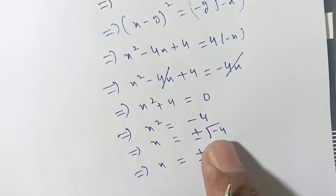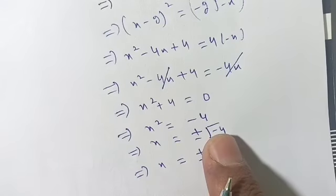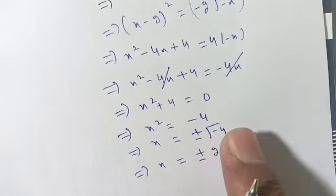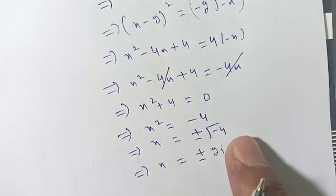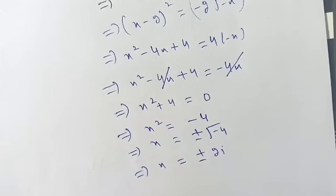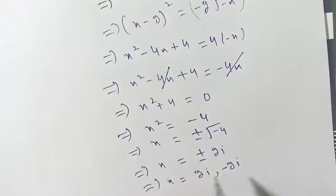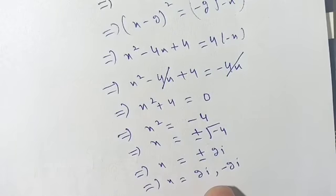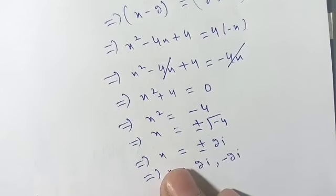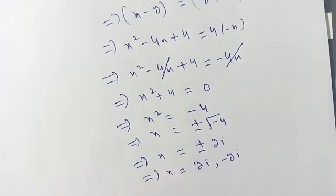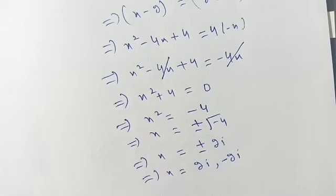Here iota means the square root of minus 1, and the square root of 4 is 2. So the value of x is equal to positive 2 iota or negative 2 iota. This is our required solution of the given equation. Hope you enjoy this problem — see you in the next video!